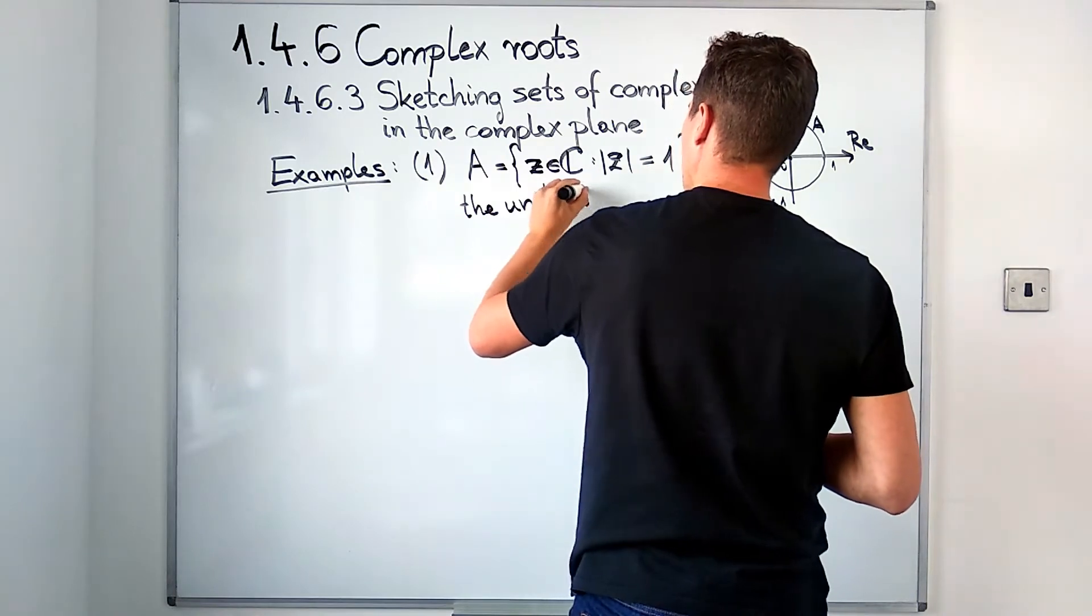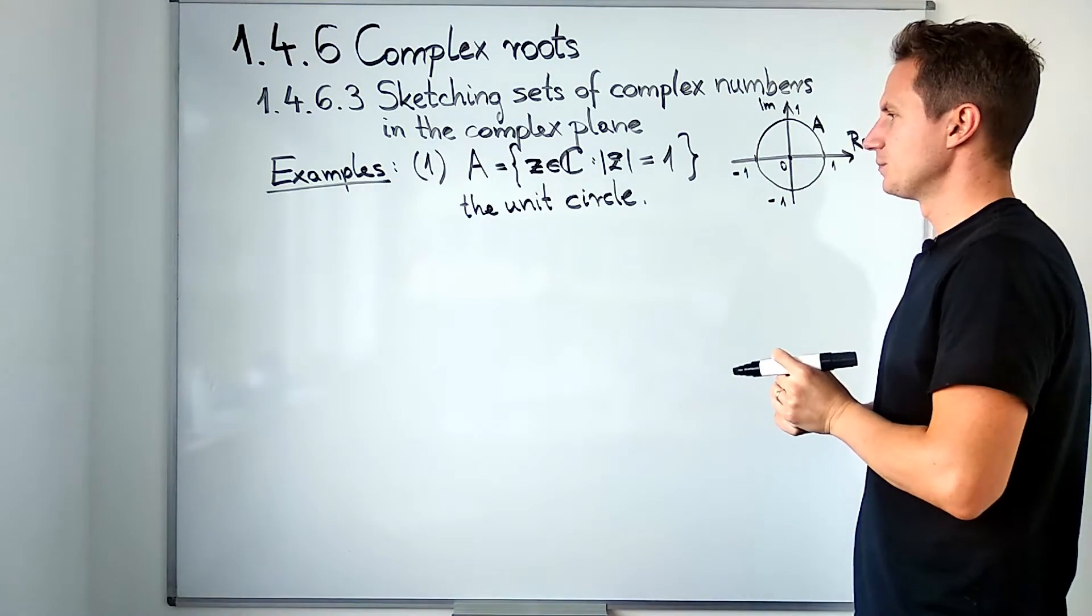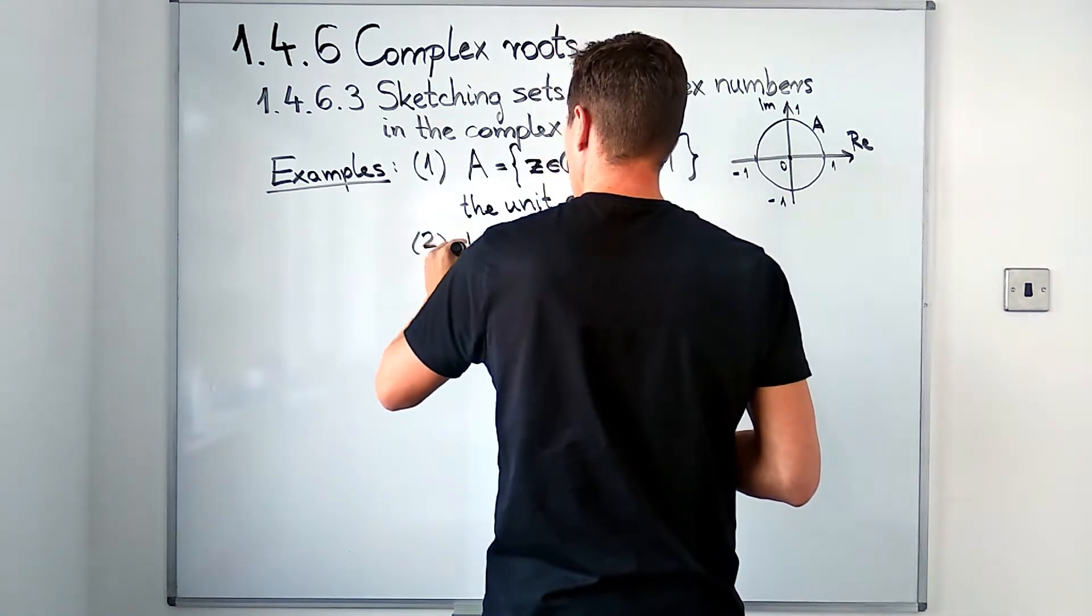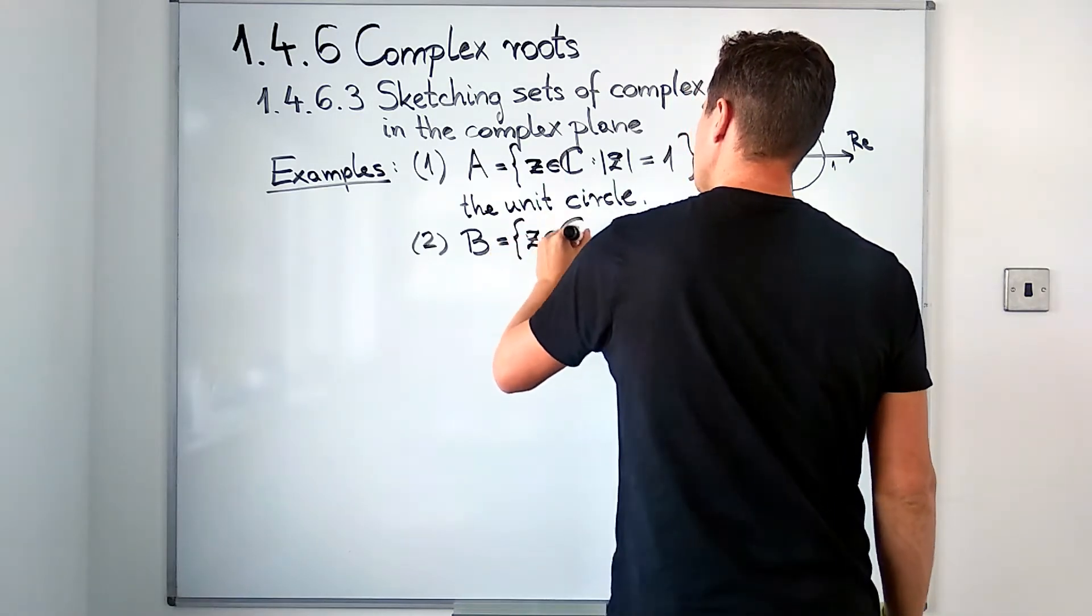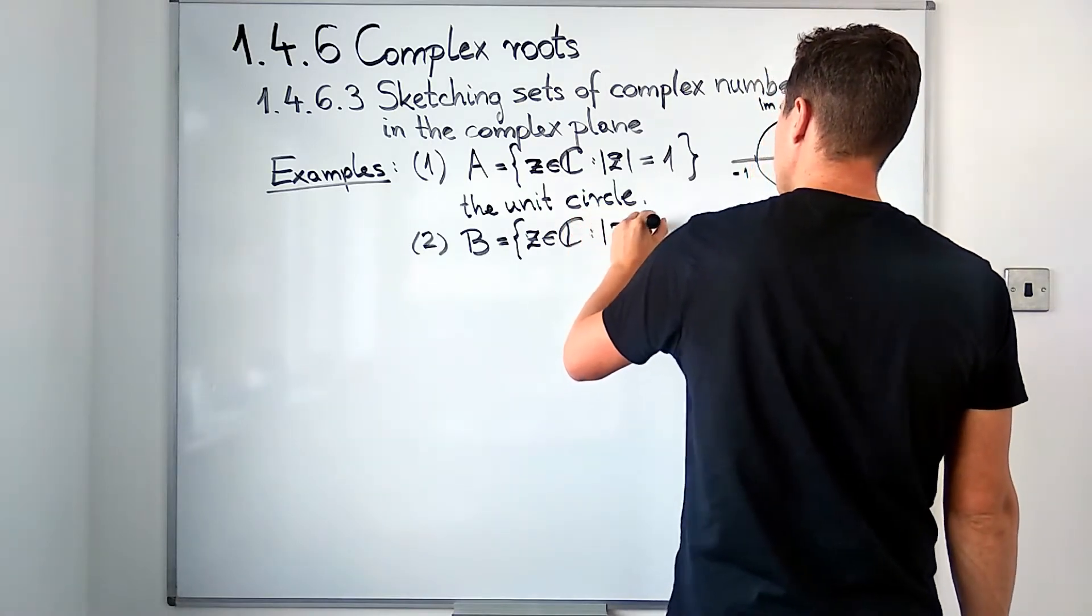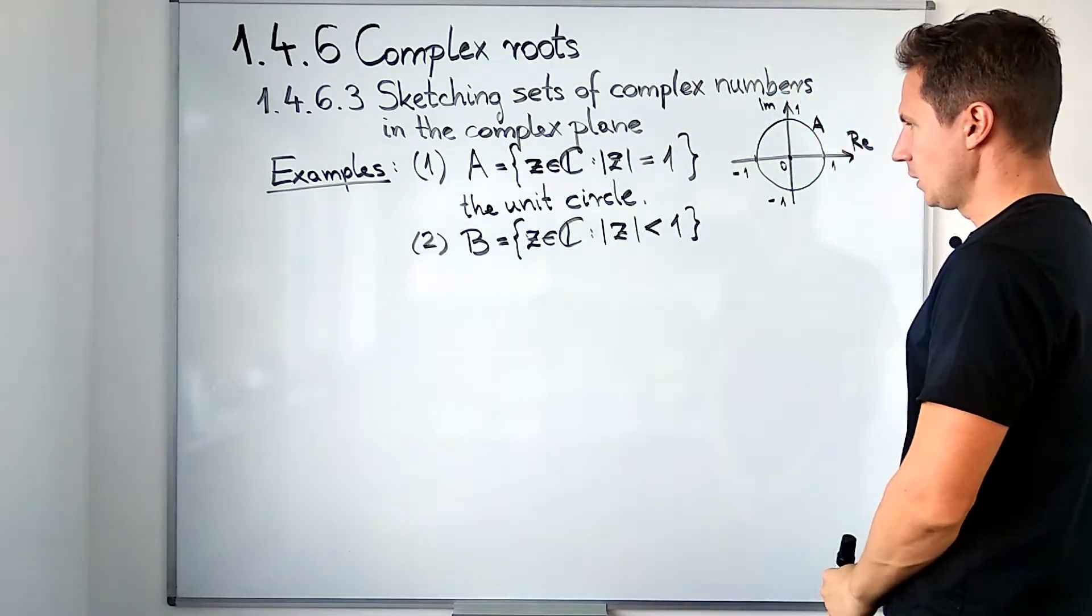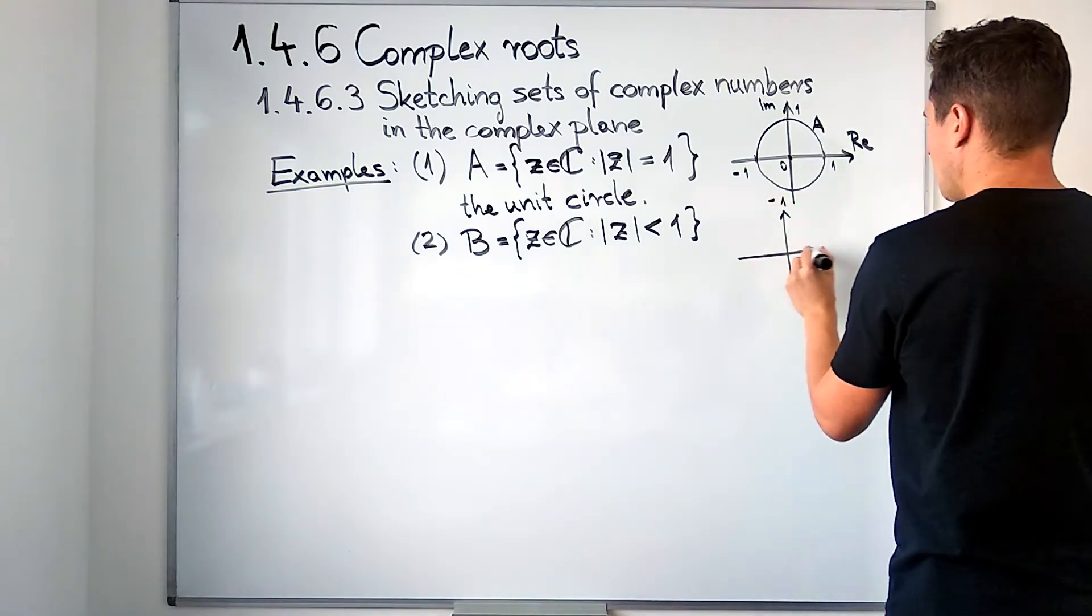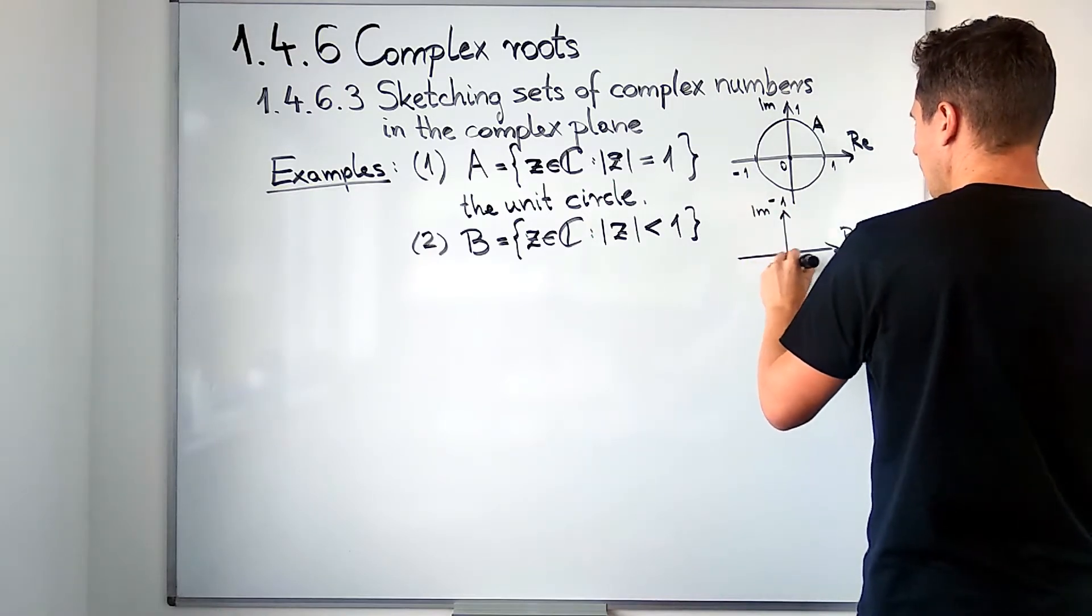Next up, we are going to look at the set B of complex numbers defined by this equation where the modulus should be strictly less than one. We are looking for numbers which are less than a unit of distance away from the origin.